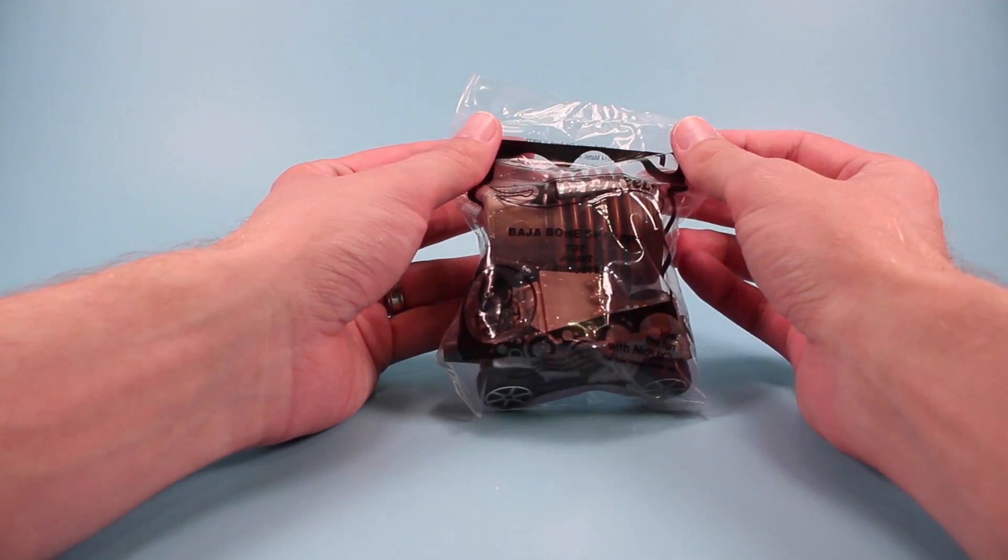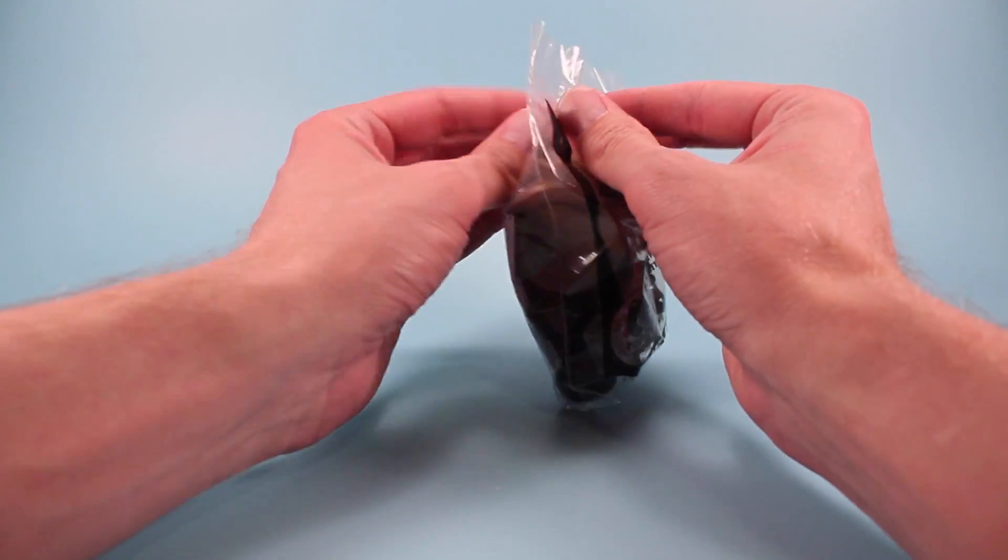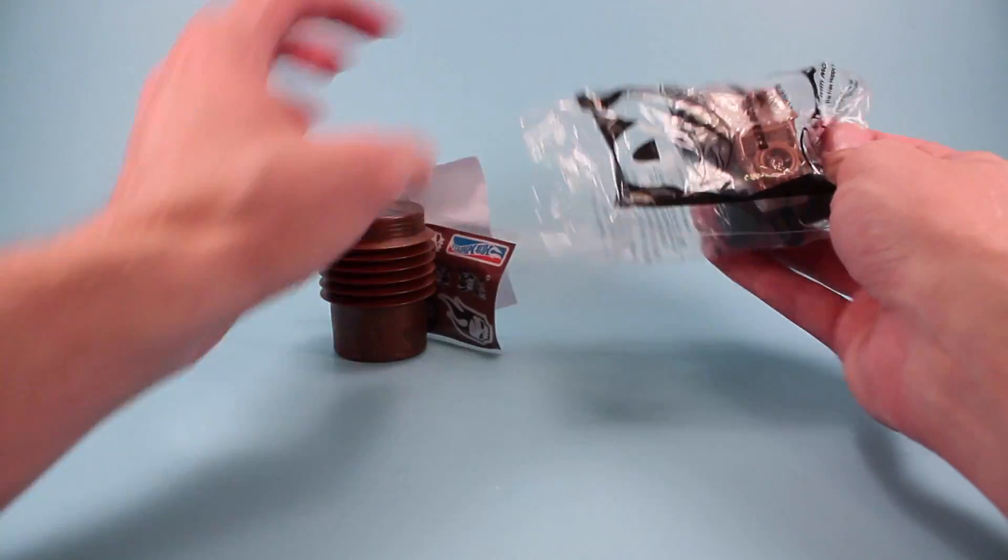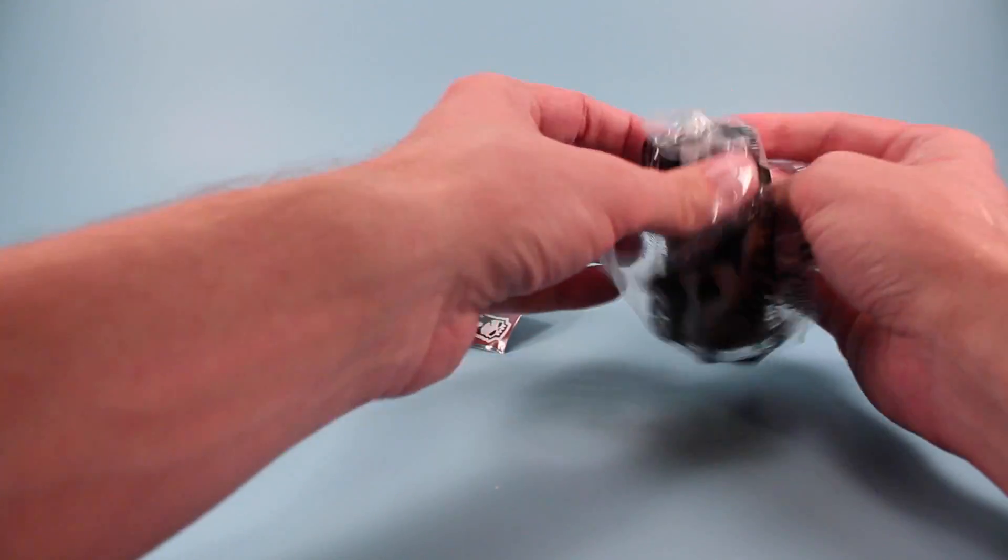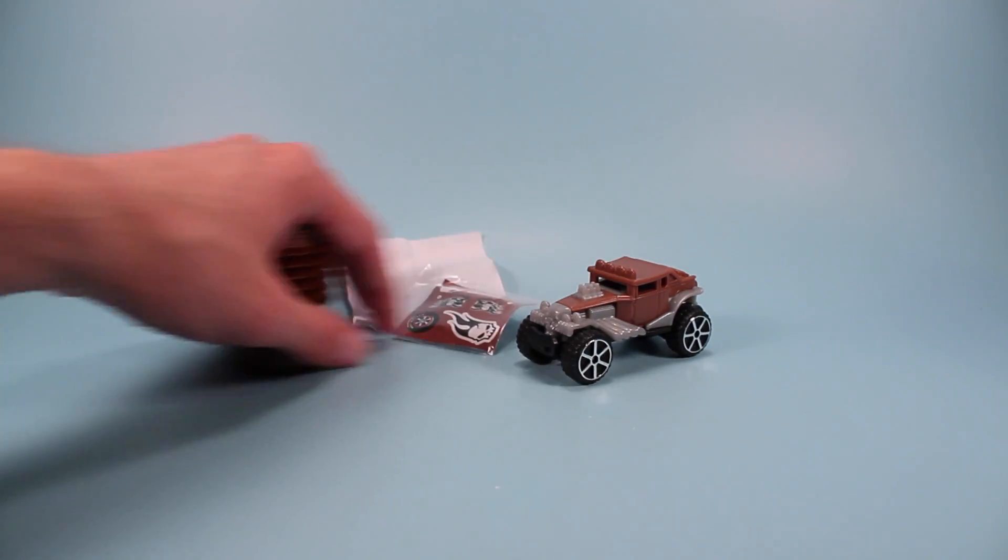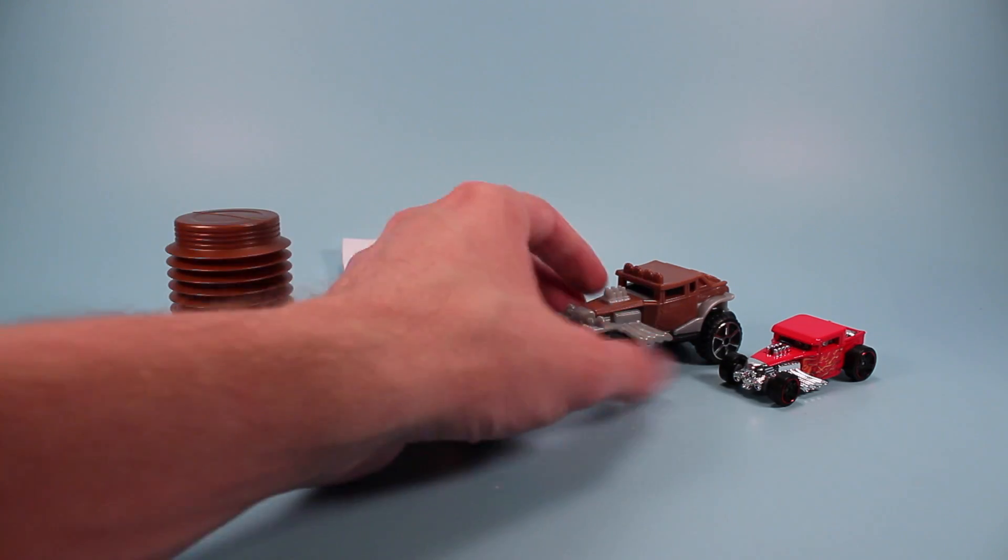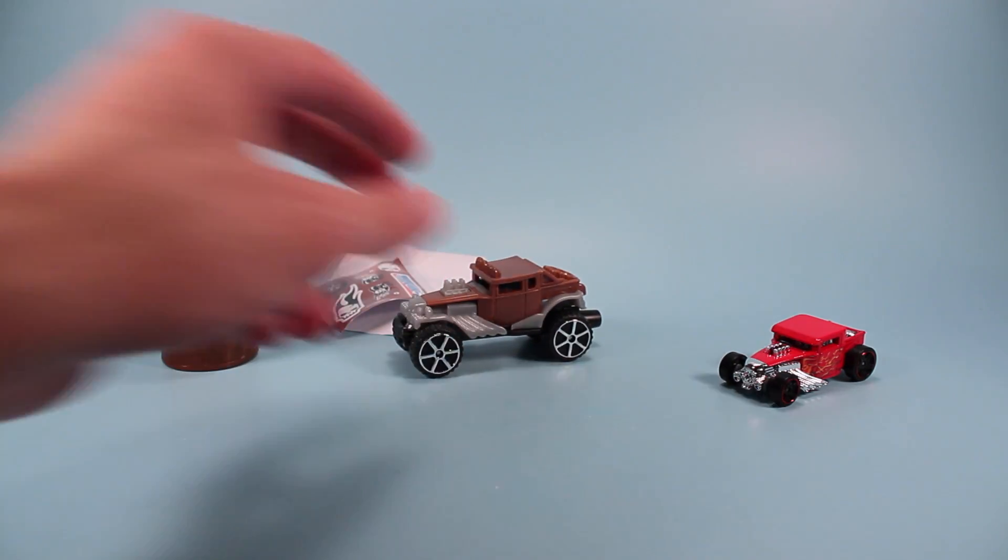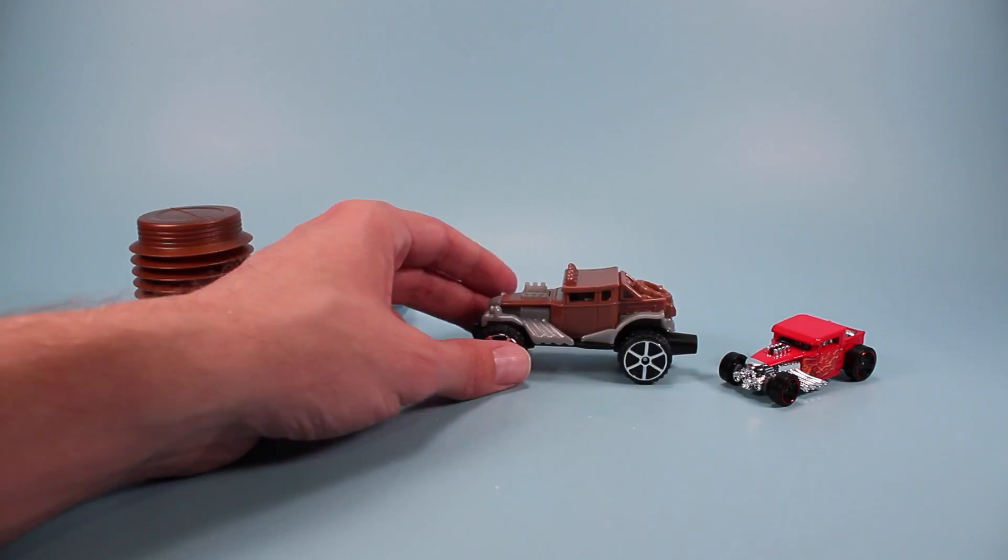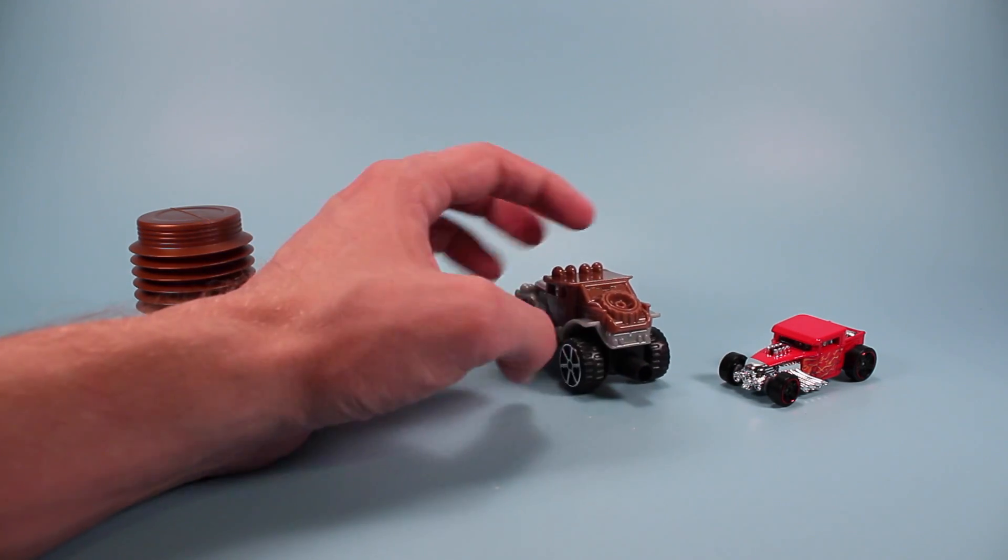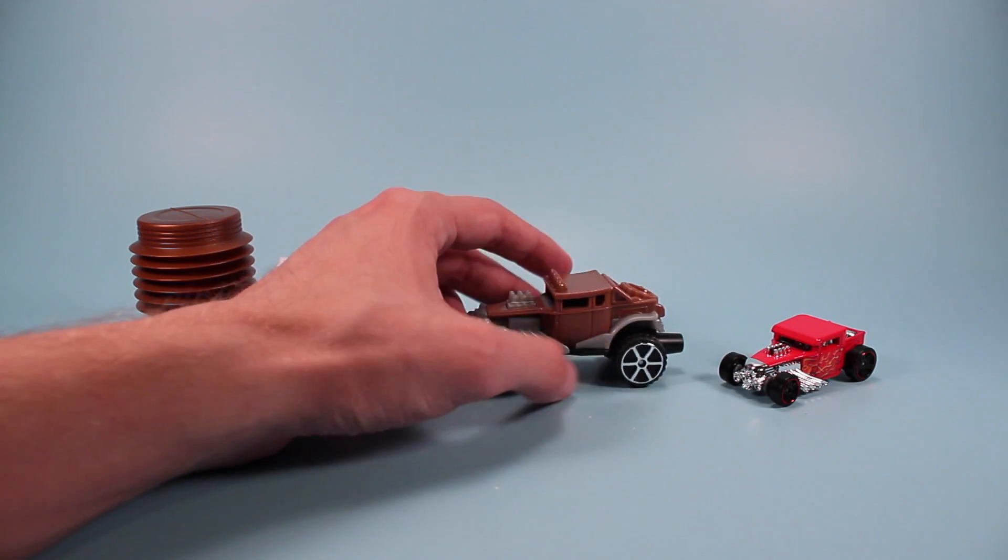The first one is the Baja Bone Shaker. Bone Shaker is one of my favorites in the Hot Wheels land of things. So here we go. It is a brown vehicle. And a quick comparison with the Bone Shaker of the Team Awesome cars. You can see the scale right now of the new plastic Happy Meal cars. And one of the reasons they're probably plastic is they are air driven. And we'll see that in just a minute.